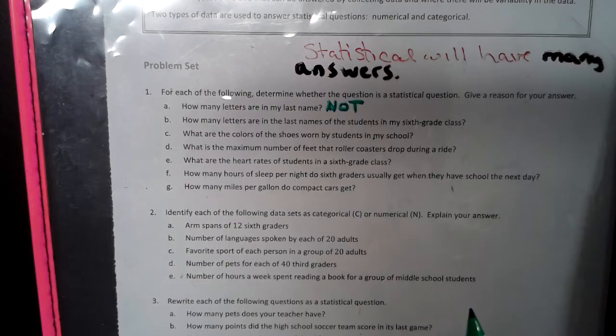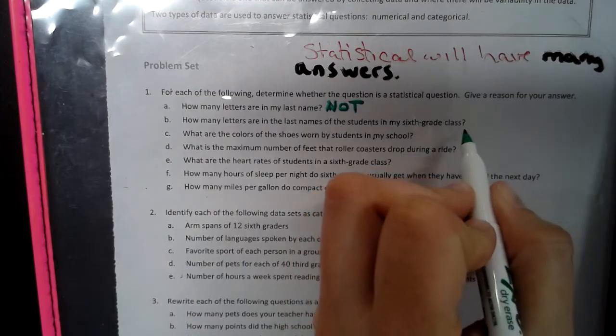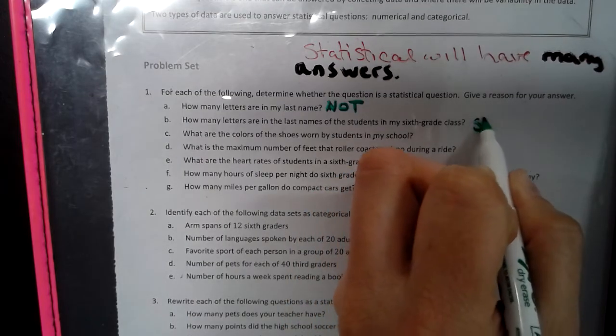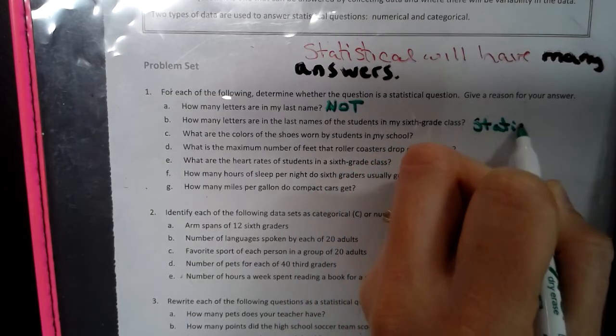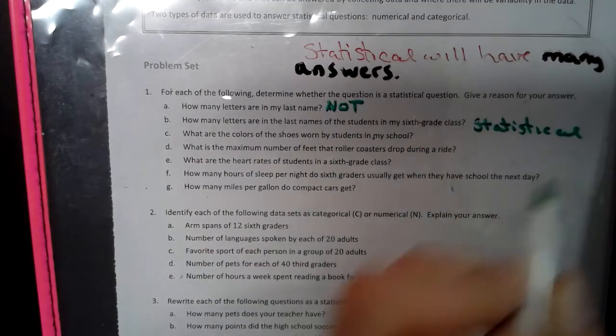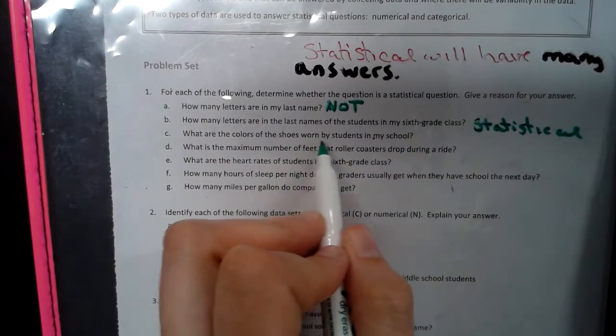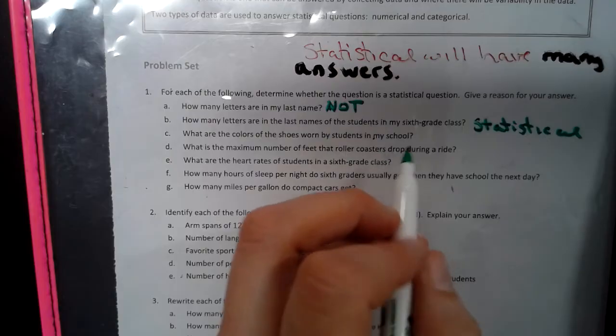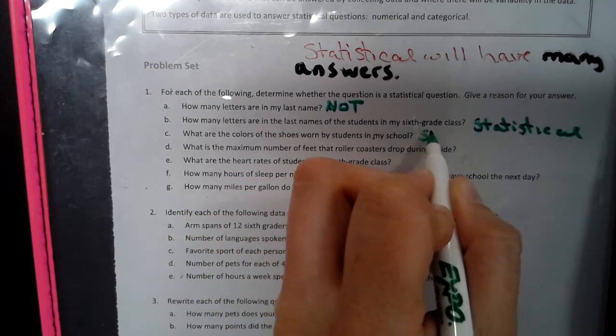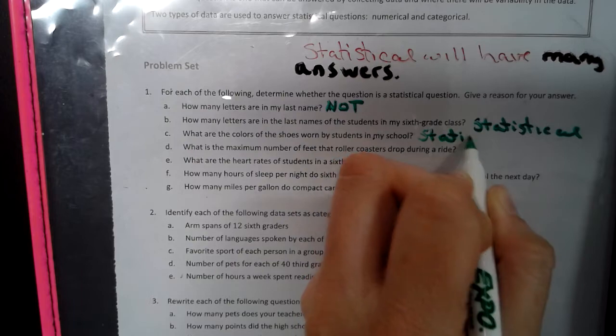But if we look at the next one, how many letters are in the last names of students in my sixth grade class, that answer will vary. So that is a statistical question. What are the colors of the shoes worn by students in my school? That would be statistical because their answers are going to vary.